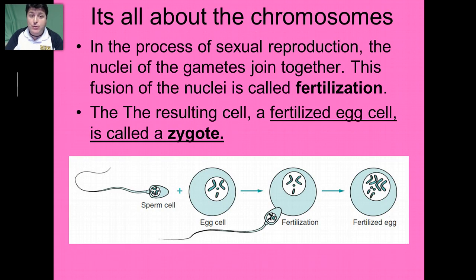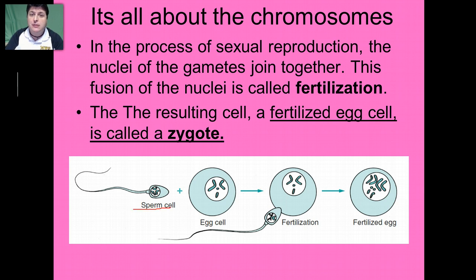In the process of sexual reproduction, the nuclei of the gametes join together. This fusion of the nuclei is called fertilization. The resulting cell — a fertilized egg — is called a zygote. So our sperm cell will fuse with our egg cell during fertilization, and this fertilized egg is also known as a zygote.